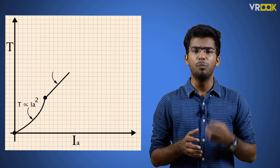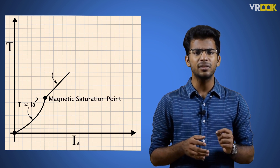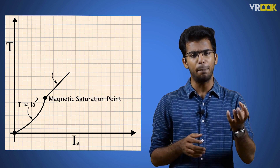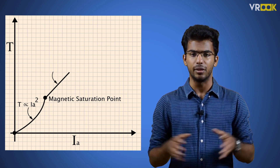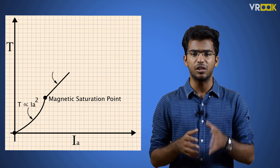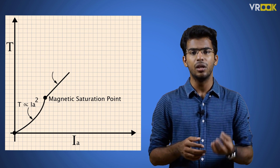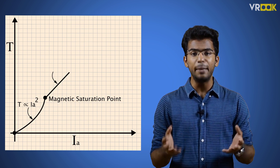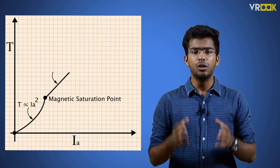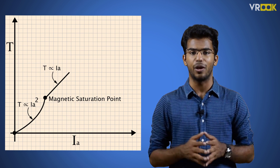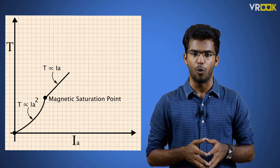After a certain point, the motor will reach a condition called magnetic saturation. This means that even if we increase the current passing through the field winding, the magnetic flux remains constant and will not increase further. So after the motor reaches magnetic saturation, the flux becomes independent of armature current, and the torque will be proportional to only the armature current, not the square of it. This gives a straight line in the graph after the saturation point.